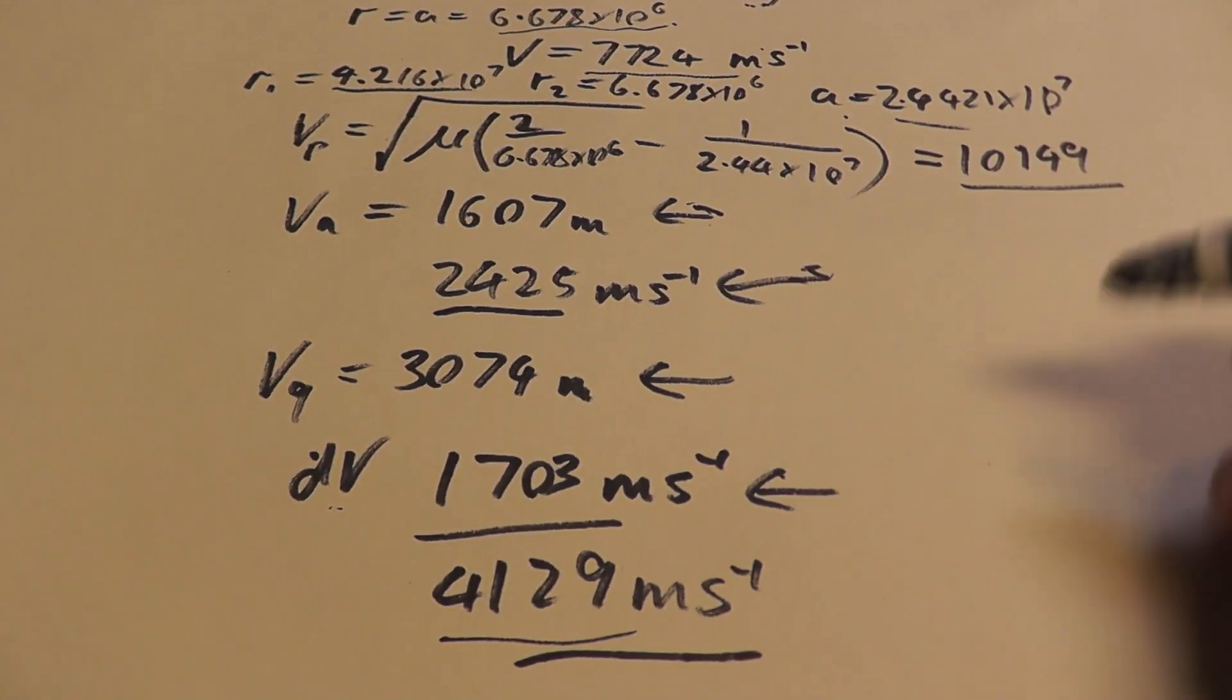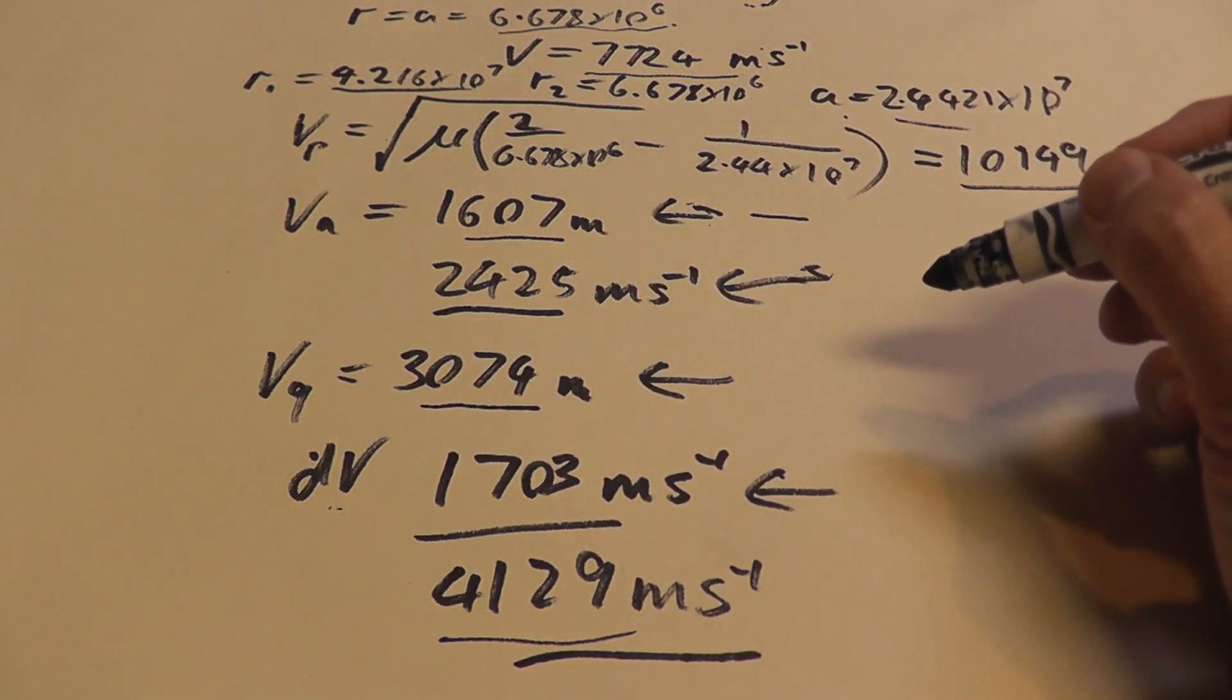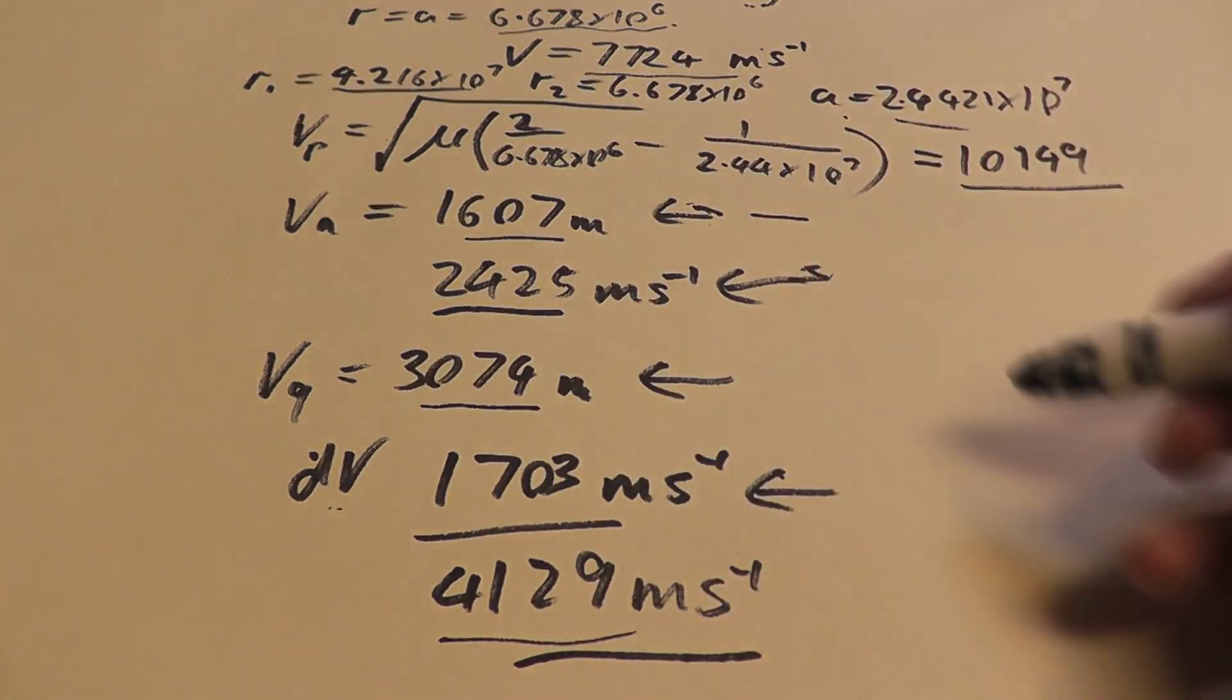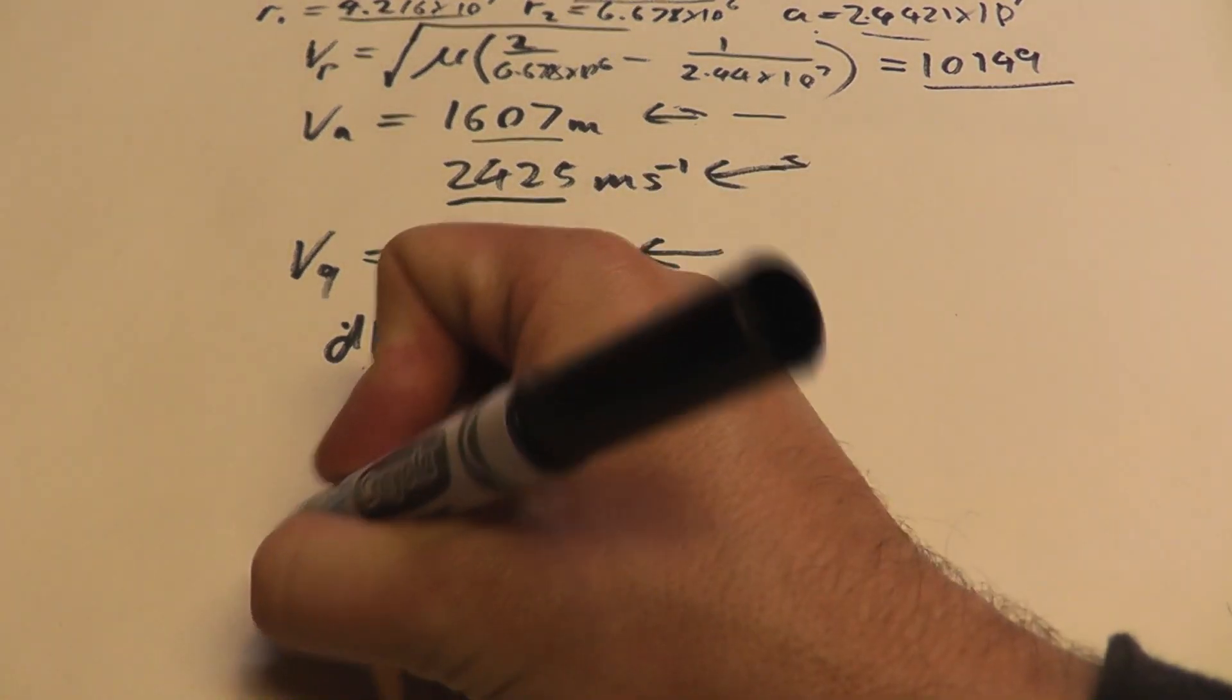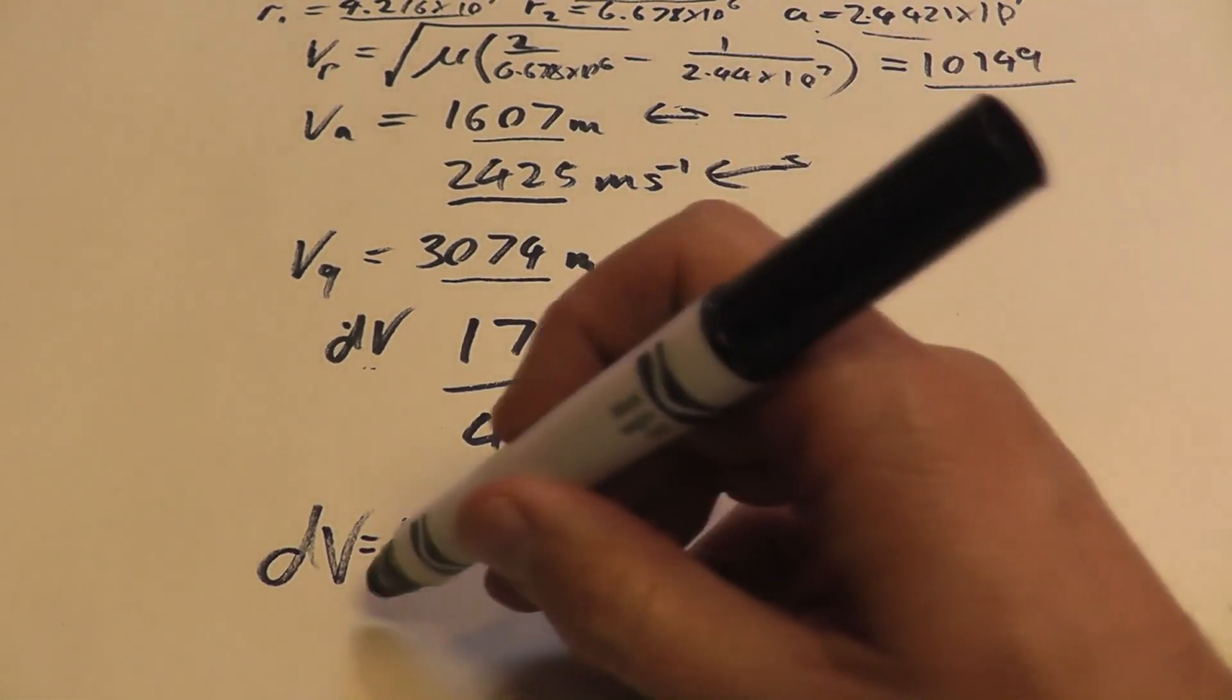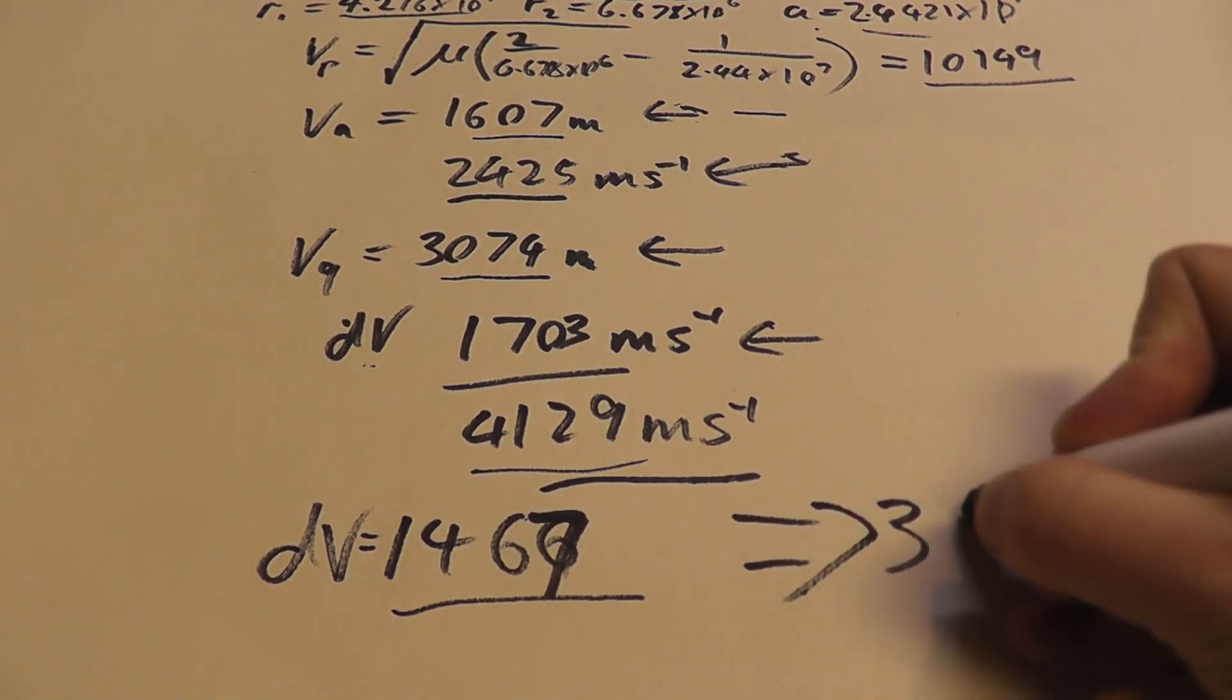However, what should have been concerning you was that I said that at apoapsis in our transfer orbit, we would be moving at 1,607, and to get into a geostationary orbit, we would have to get up to 3,074. And I said that would take 1,703. That's actually completely bogus because if you subtract 1,607 from 3,074, you get 1,467. So delta V for the injection into geostationary orbit is 1,467. Which means 1,467 plus 2,425 is of course 3,892.